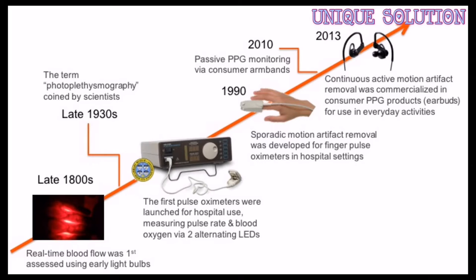There are 5 primary challenges in heart rate sensor accuracy: 1) optical noise, 2) skin tone, 3) crossover problem, 4) sensor location, and 5) low perfusion. Each of these presents a challenge to achieving good accuracy.